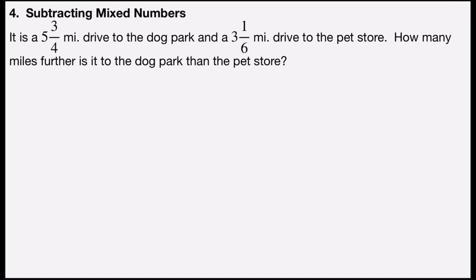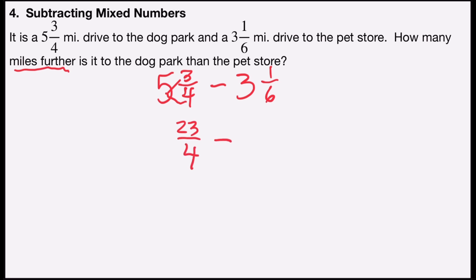Problem number four is subtracting mixed numbers. It says it's a five and three-quarter mile drive to the dog park and a three and one-sixth mile drive to the pet store. How many miles further is it to the dog park than the pet store? How many miles further indicates subtraction. We're going to take five and three-fourths and subtract three and one-sixth. To subtract mixed numbers, I like to change them into improper fraction form. So I'll multiply four times five, which is twenty, and add three — that's twenty-three over four. Minus: six times three is eighteen, plus one is nineteen over six.